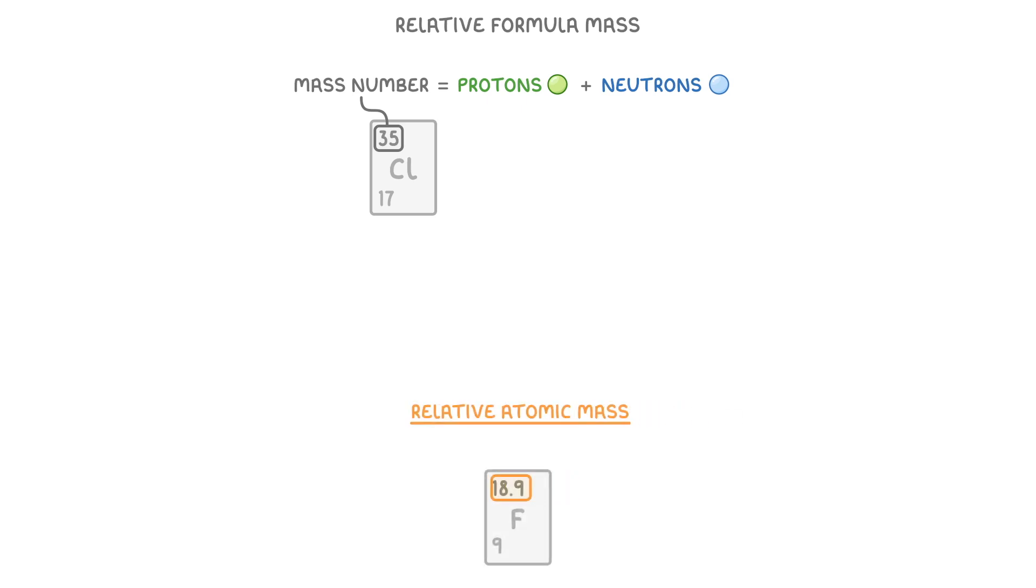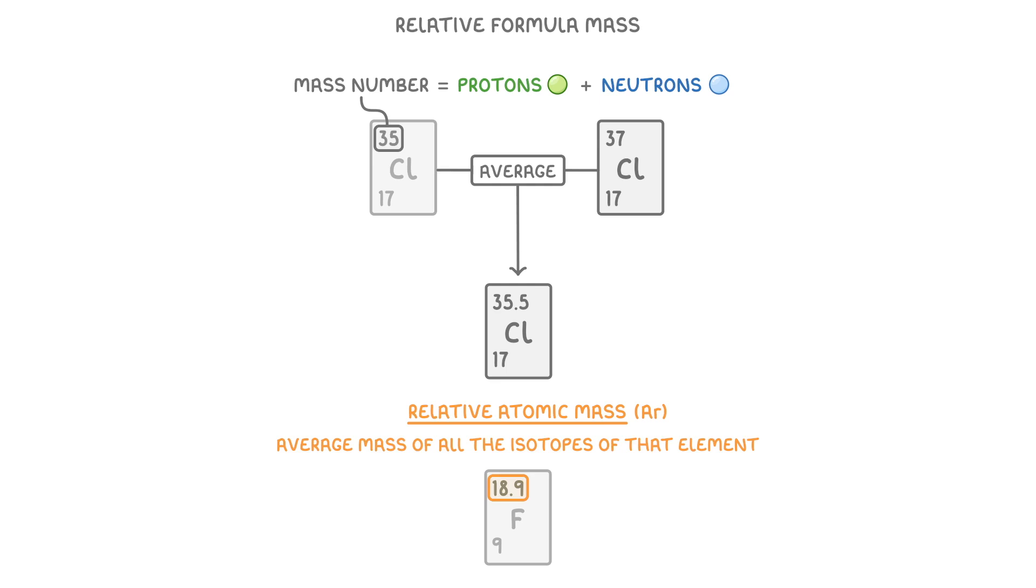Sometimes though, the nucleus symbols will show the relative atomic mass instead, which is the average mass of all the isotopes of that element, and is denoted with Ar. So whereas particular chlorine atoms could have mass numbers of 35 or 37, chlorine as an element has a relative atomic mass of 35.5, because that's the average mass of these two isotopes when we consider how common each one is.